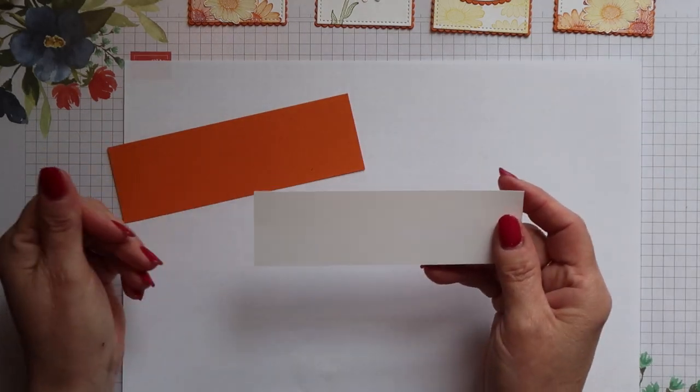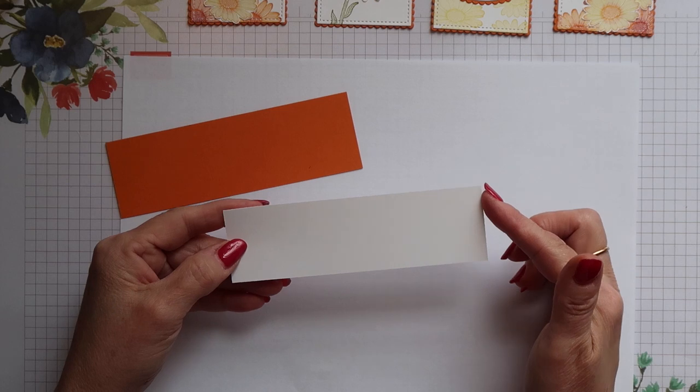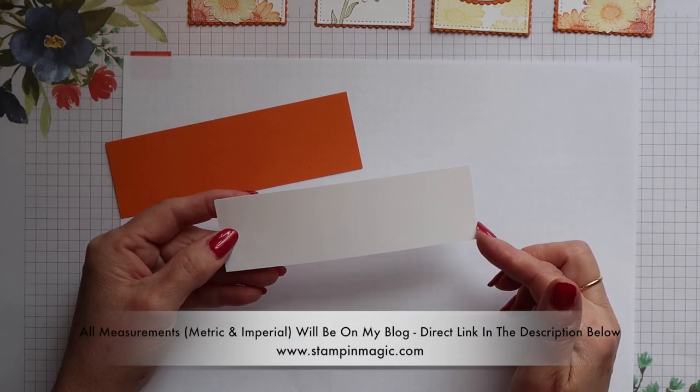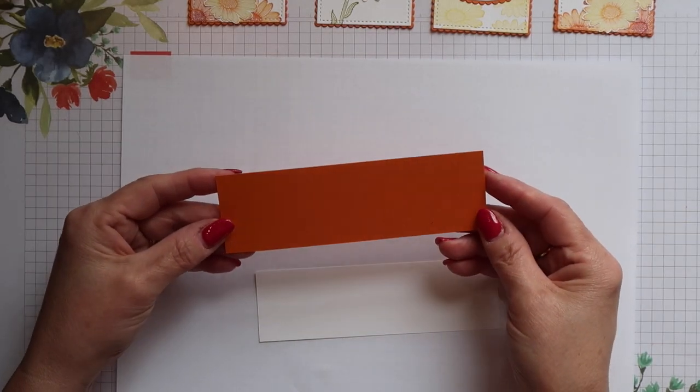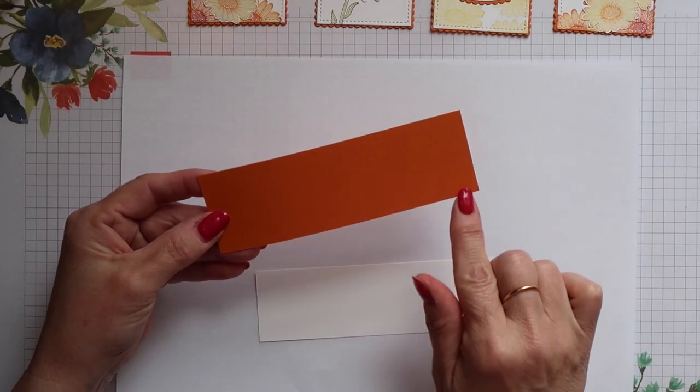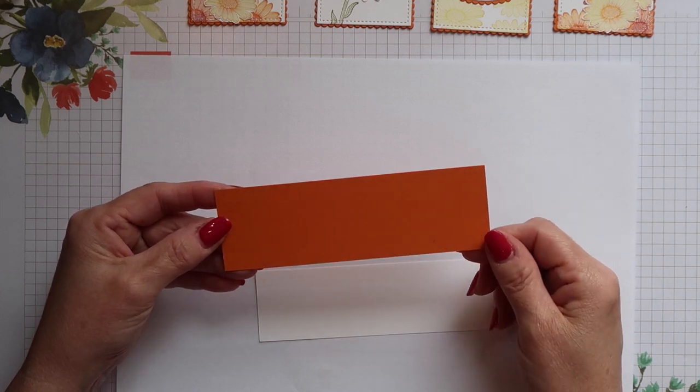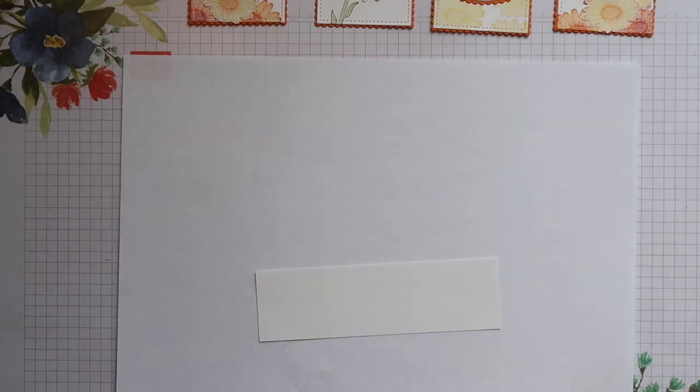I have two additional layers for the front of the card. This white layer measures 14cm by 4.1cm or if you're in the US 5 1/8 inch by 1 5/8 inch. The pumpkin pie layer measures 14.4cm by 4.5cm which for the US that's 5 1/4 inches by 1 3/4 inches.